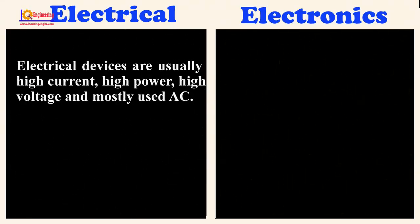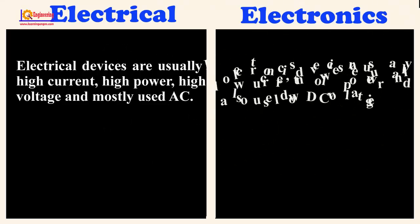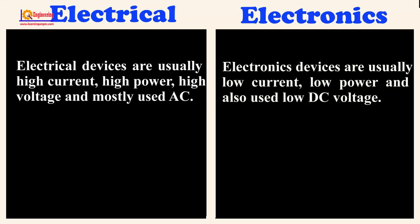Electrical devices are usually high current, high power, high voltage, and mostly use alternating current. Electronics devices are usually low current, low power, and also use low DC voltage.